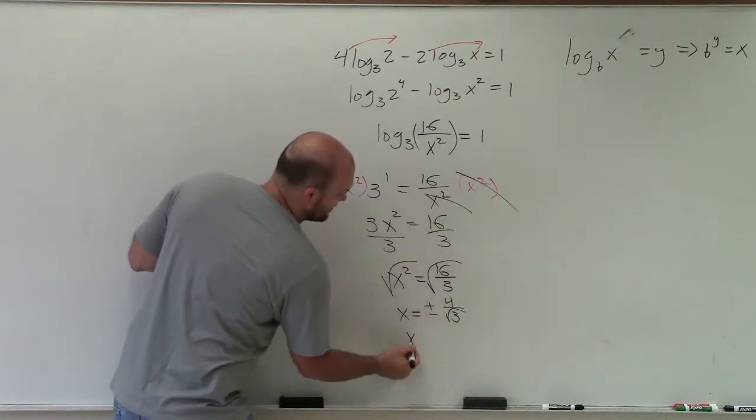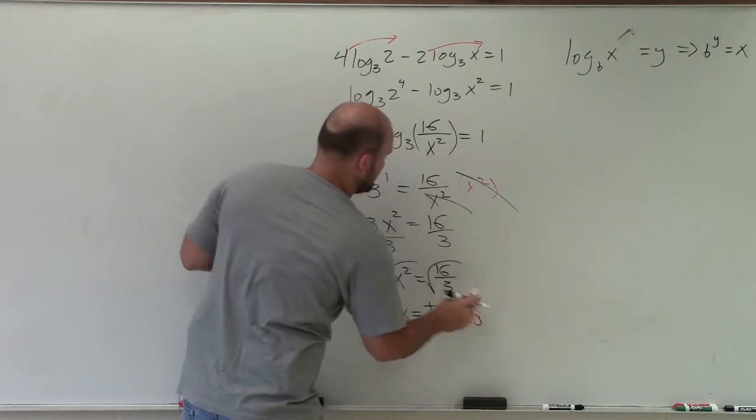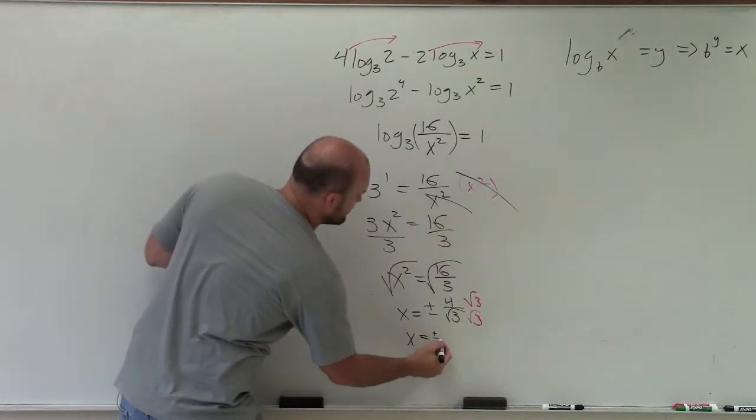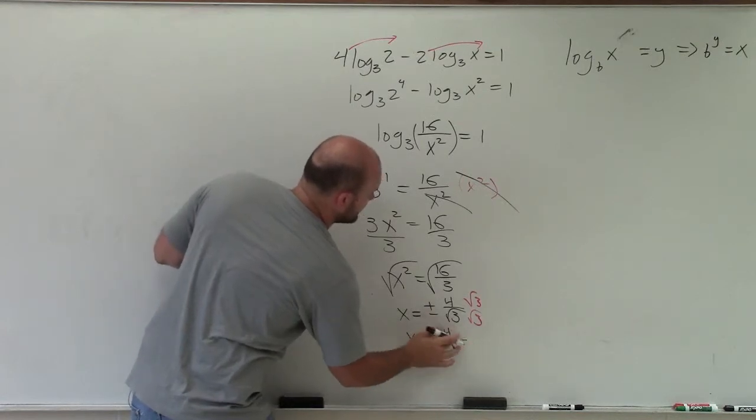And I could rationalize the denominator if you like. So therefore, it's plus or minus 4 square root of 3 over, I'm sorry, yeah, 4 square root of 3 over 3.